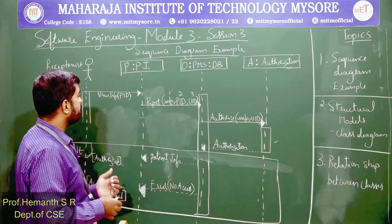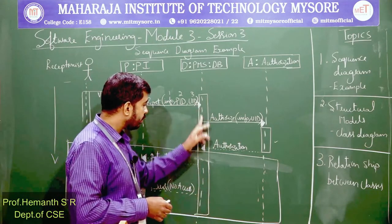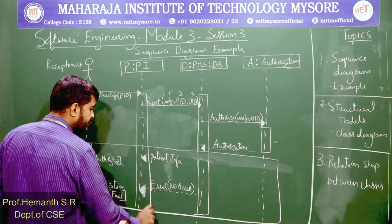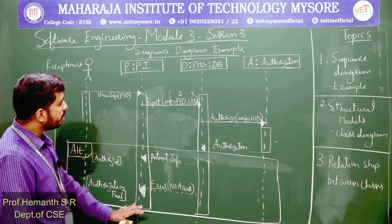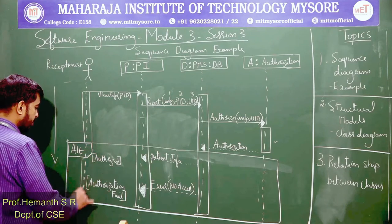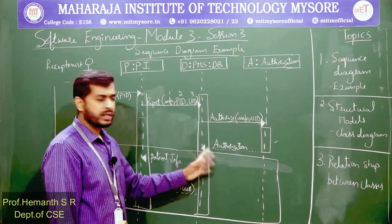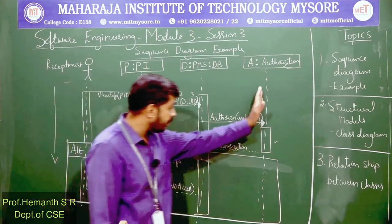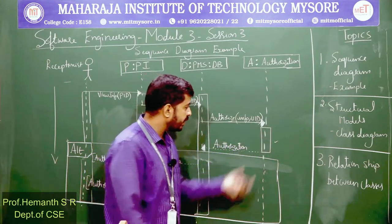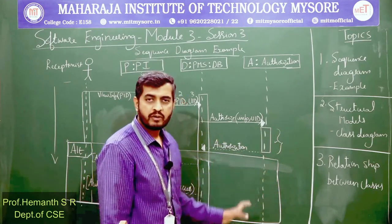The duration during which each entity is active is represented by a rectangular block on the timeline. The PI was active for one duration, the database for another, and the receptionist throughout. Please note the authorization system is not active for the complete duration — it is only active during the period it received the request, performed computation, and sent back the authorization response. After that, it is no longer active in this scenario.